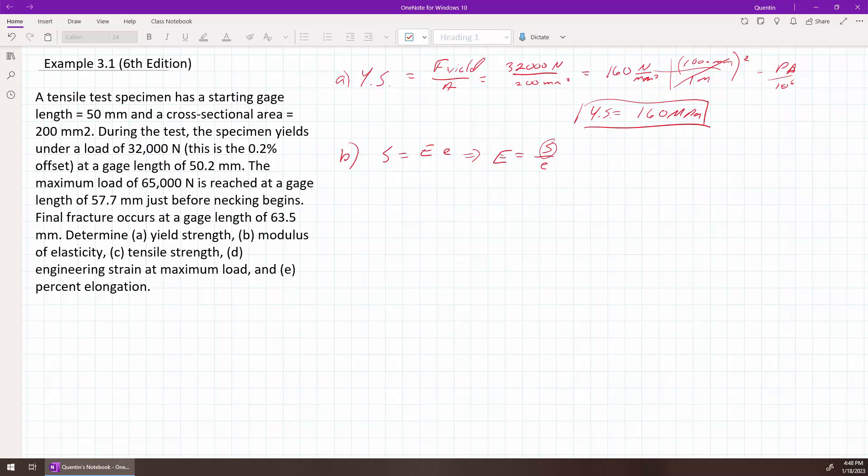And so we know this, we just calculated it. At that point, we know it's 160 megapascals. What is E? Well, E is simply L minus L naught over L naught. So that's, in this case, the 50.2 minus 50 over 50. So that's equal to 0.2 over 50, which is 0.004. But an important thing here is this is the 0.2% offset. So we need to subtract off 0.002 to account for that. So the strain that we're going to use here is 0.002.